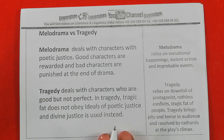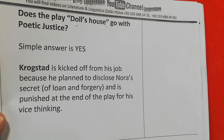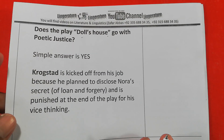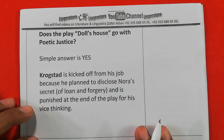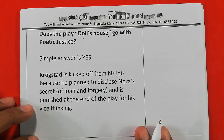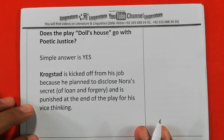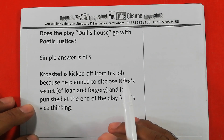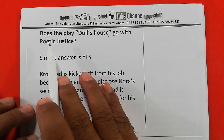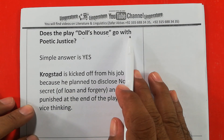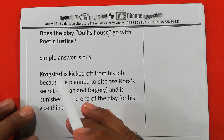From these discussions: if a good character gets rewards or a bad character is punished by the writer at the end of the drama, then the writer is using poetic justice as a literary device. Now we are going to look at the question: does the play Doll's House go with poetic justice?